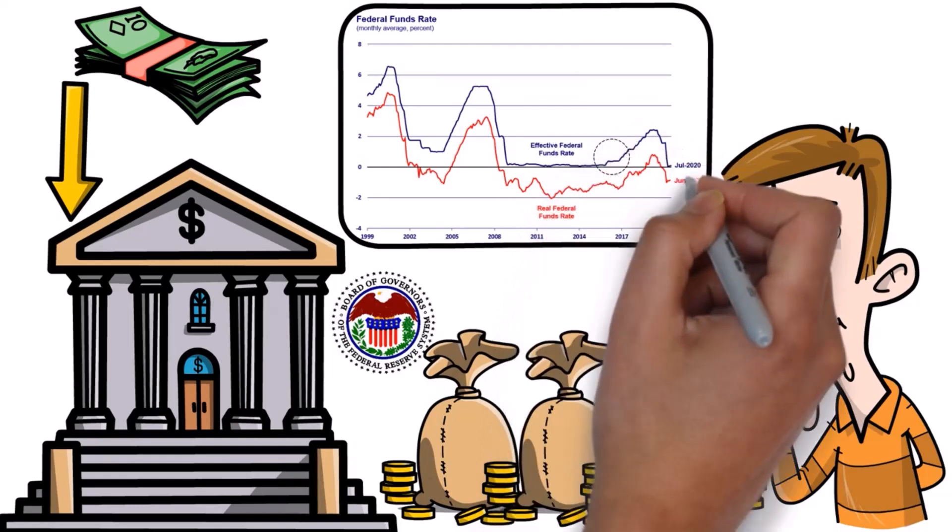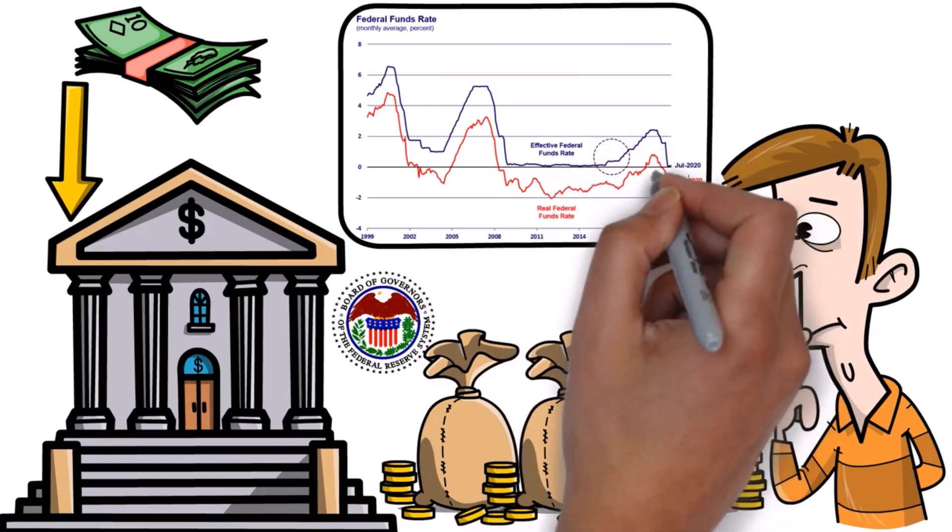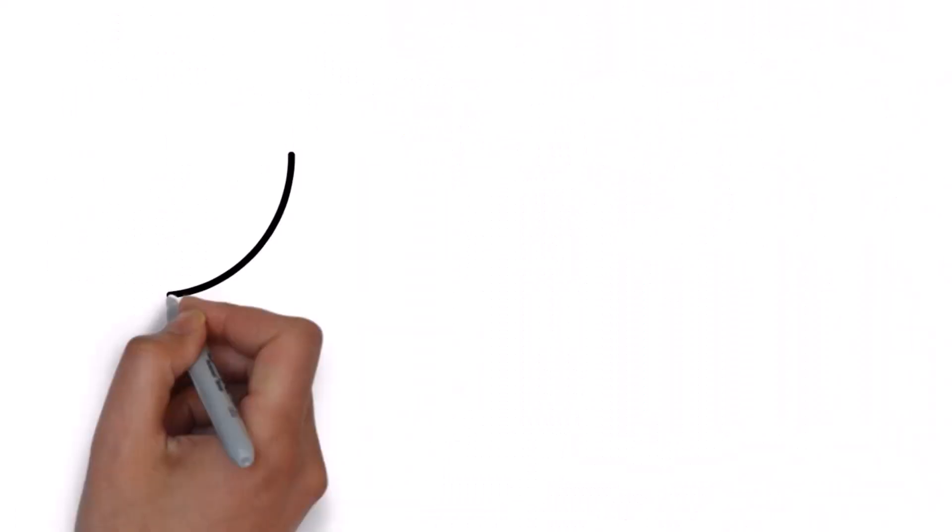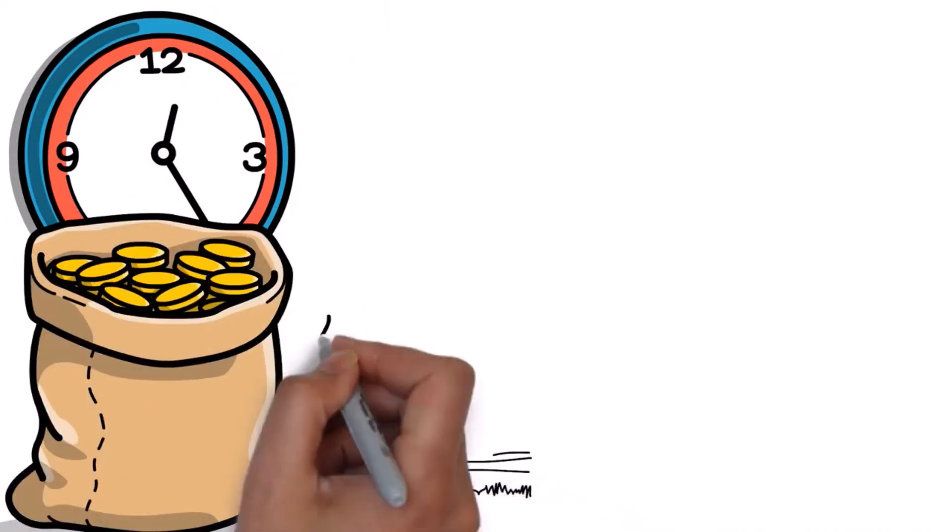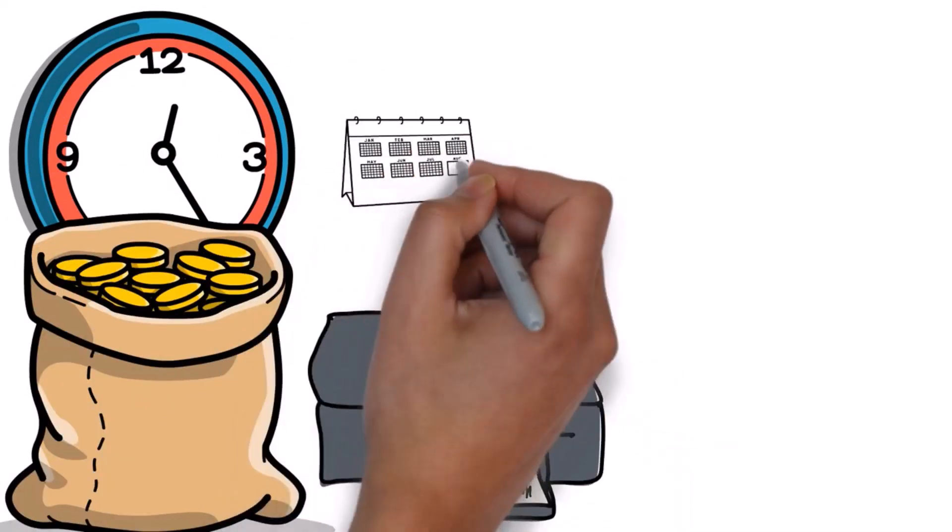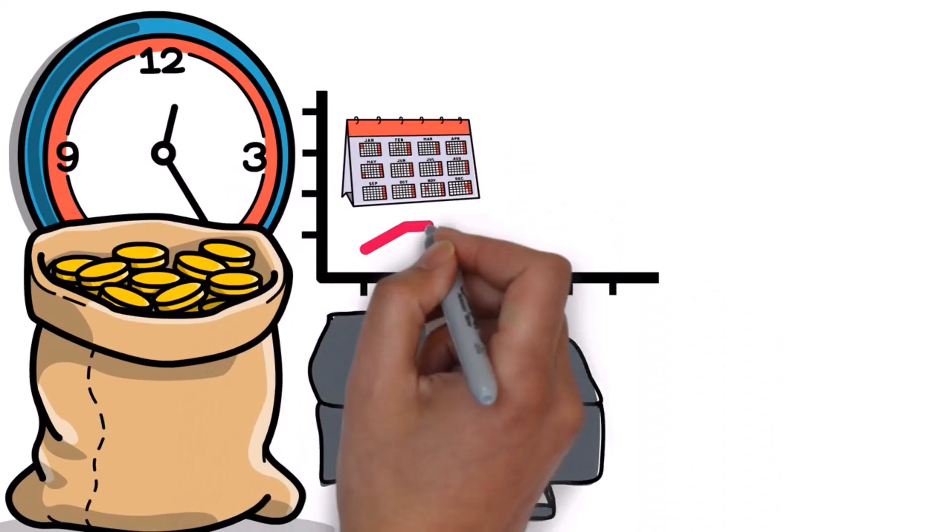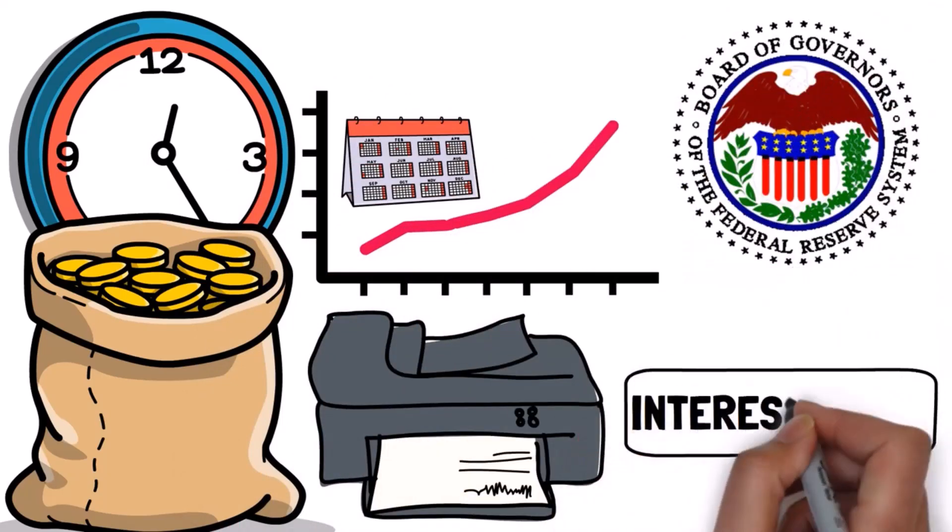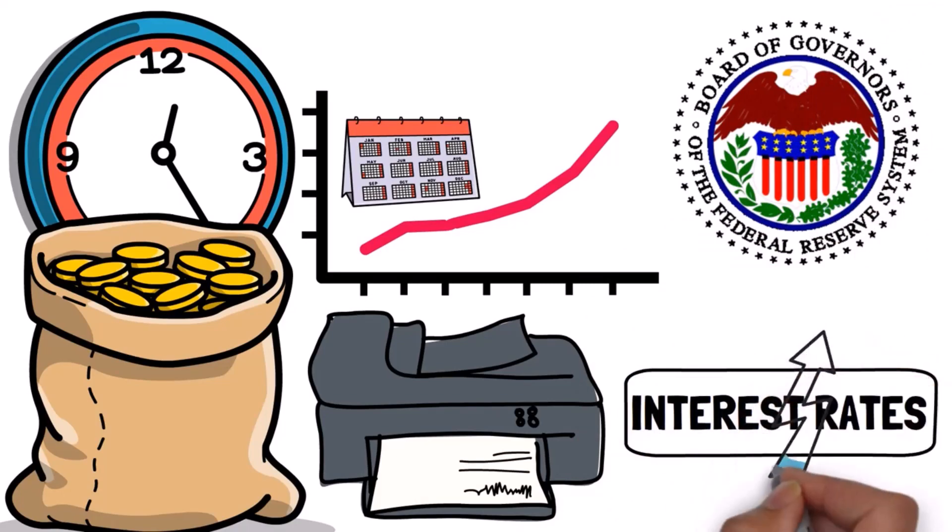But in 2020, they got scared that the economy might struggle, so they went back to zero interest rates. During all of this, they also started creating a lot of new money, which is like printing more money. And in 2021, prices for things started going up a lot, inflation, and the Federal Reserve tried to stop this by raising interest rates faster than they ever had before.